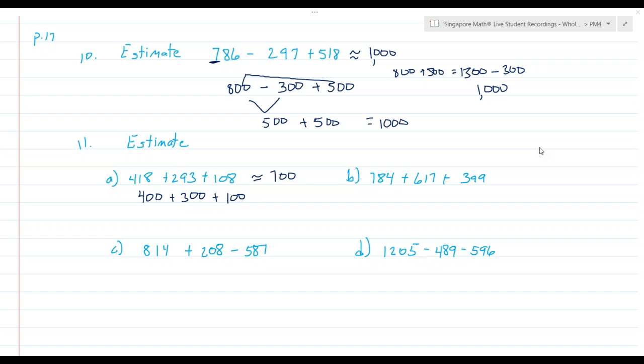By the way, in your workbook, it tells you each time round to the nearest hundred. In this, it actually just says estimate the value. But if you look at the little person with the thought bubble, it does tell you that you're rounding each number to the nearest hundred. 784 rounds to 800. 617 rounds to 600. 399 rounds to 400. So if I add these together, I notice 600 and 400 make 1000, so I'm going to say this is about the same thing as 1800.